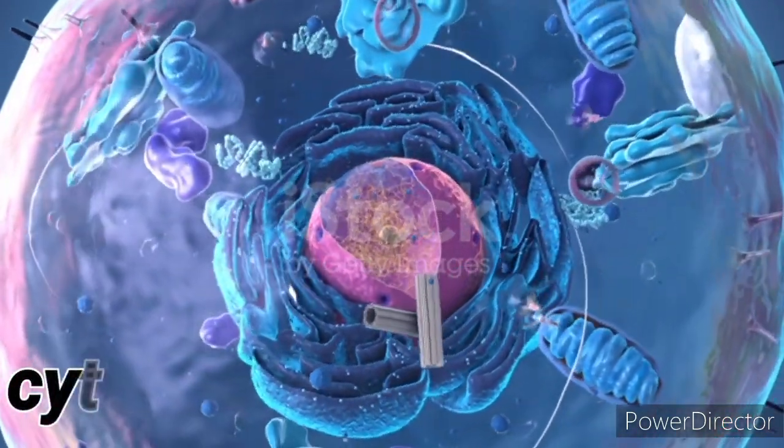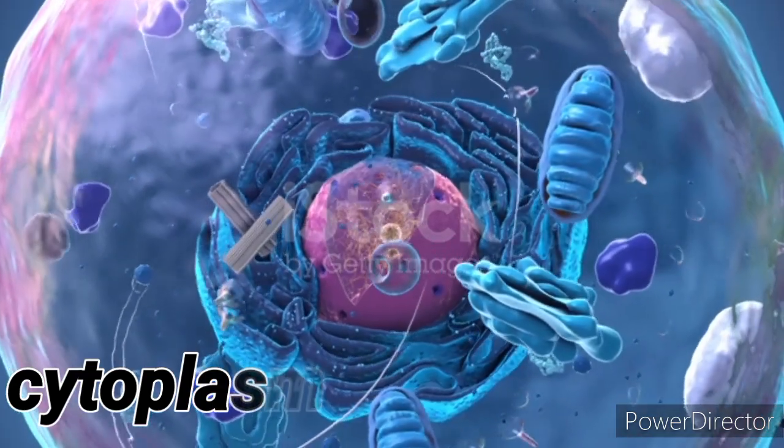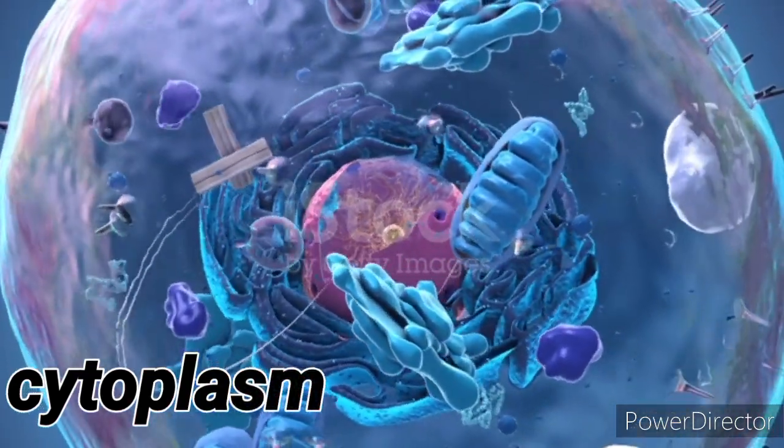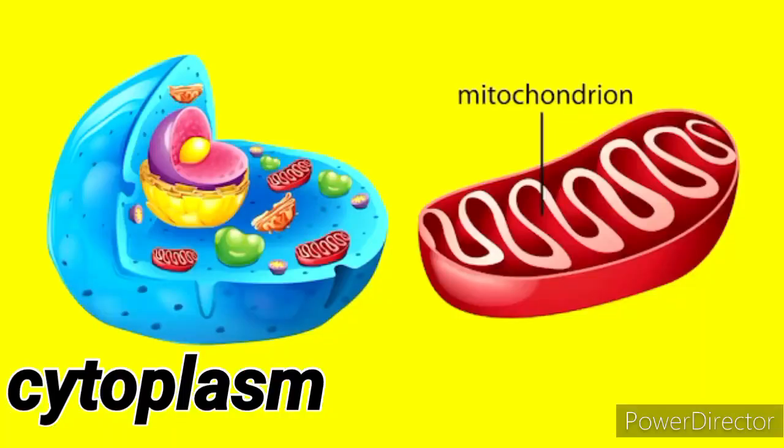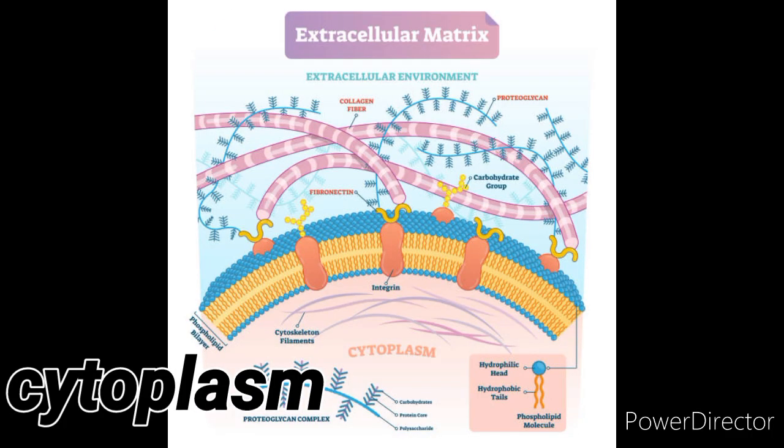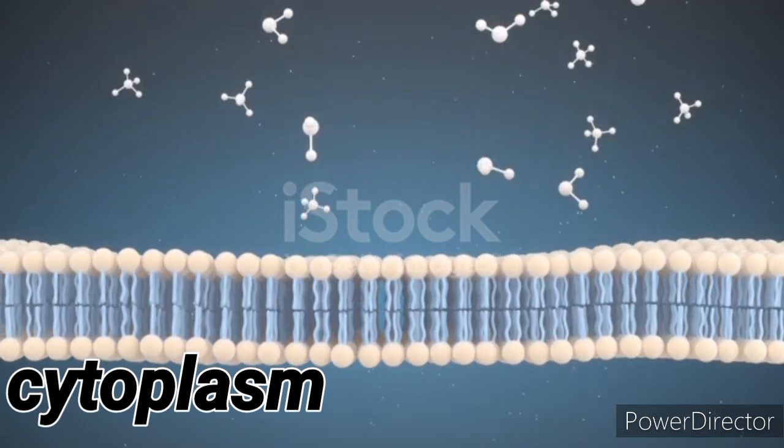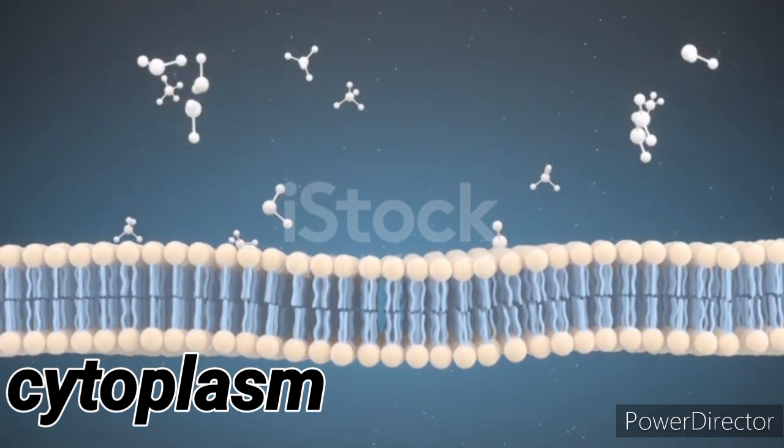Definition. Cytoplasm is a gel-like substance present within cells, enclosed by the cell membrane. It contains various organelles, such as mitochondria, ribosomes, and the cytoskeleton, and serves as the site for many cellular activities, including metabolism and transport of materials within the cell.